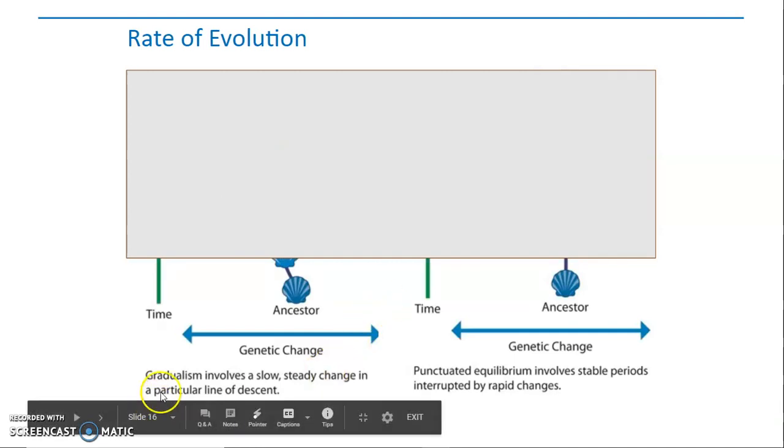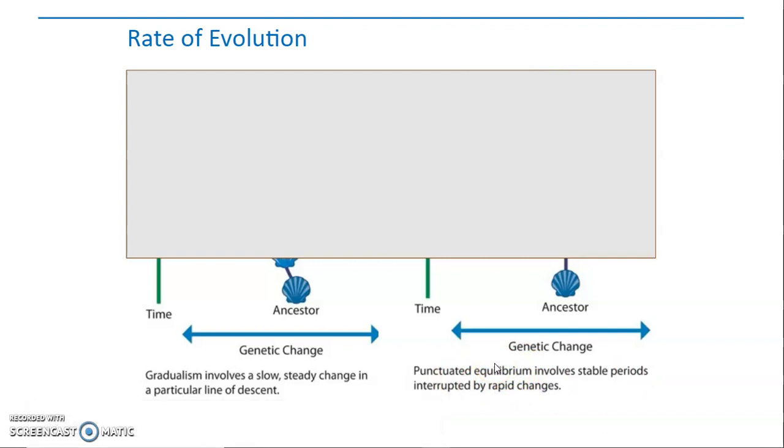Alright, so gradualism involves a slow, steady change in a particular line of descent, whereas punctuated equilibrium involves stable periods interrupted by rapid changes. Right, so it stays the same and stays the same, and then there's big change, stays the same, big change.